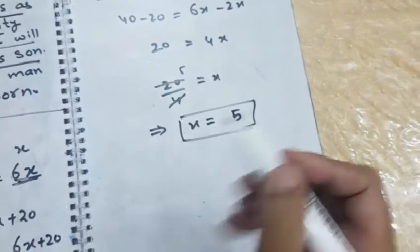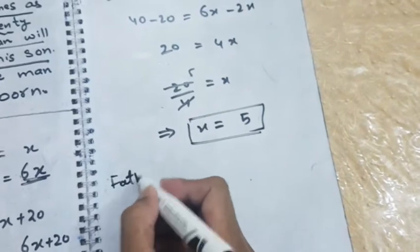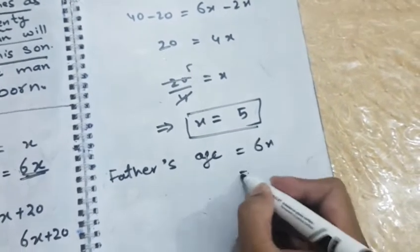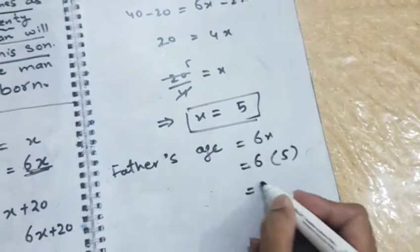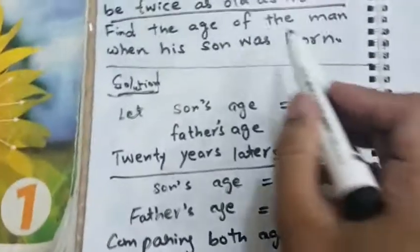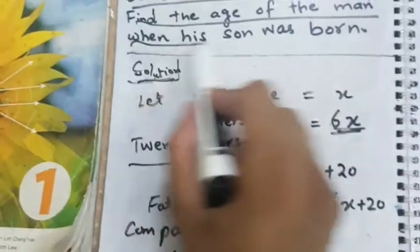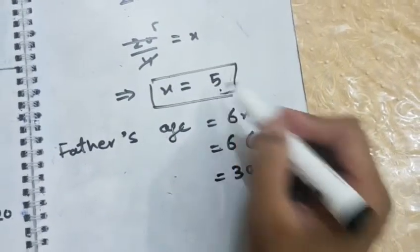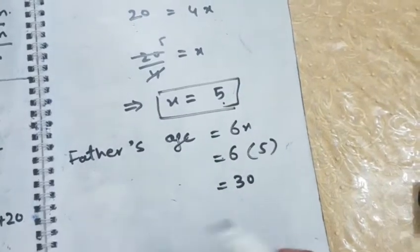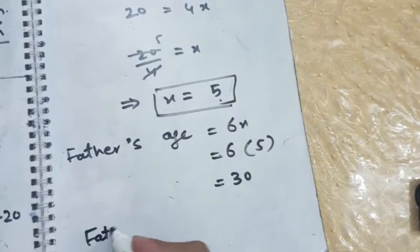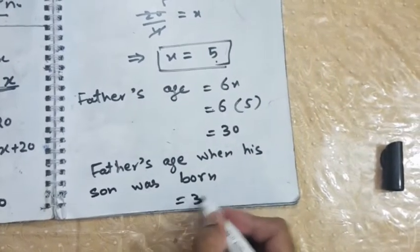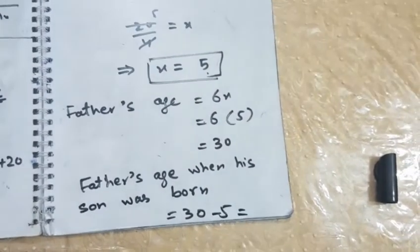ये तो आगी जी बेटे की age. अब father की age, father's age जो मजूदा थी वो 6x थी. means 6 multiply by 5 वो होगी 30. अब सूल की demand क्या है? Find the age of the man when his son was born. यानि के बेटे की age अगर मजूदा 5 साल है तो 5 साल पहले उसकी, मतलब के 0 age होगी. तो father की father's age when his son was born is equal to 30 minus 5. 25